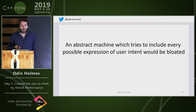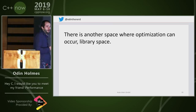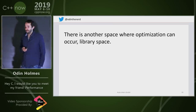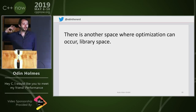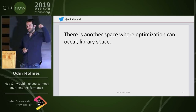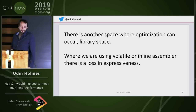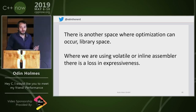There's another space where we can do optimization: library space. I was kind of expecting this to be contentious, but then in Hannah's keynote she said 'obviously in library space I prune this big graph of transitions because the optimizer won't do it.' So I use library space to fix the problem of loss of expressiveness when using inline assembler or volatile.